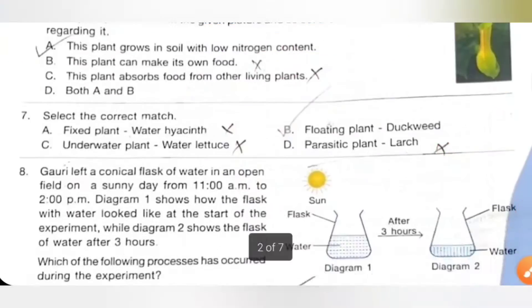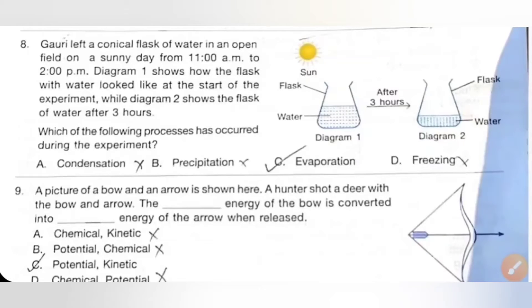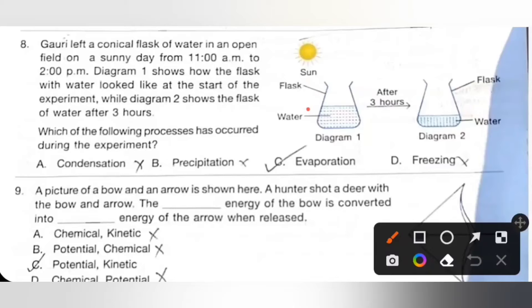Eighth one: Gowri left a conical flask of water in an open field on a sunny day from 11 a.m. to 2 p.m. Diagram 1 shows how the flask with water looked at the start of the experiment, while diagram 2 shows the flask of water after 3 hours. Which of the following process has occurred during the experiment? Option C: Evaporation. Evaporation is the process of changing water into water vapor on heating. So option C is the correct answer.